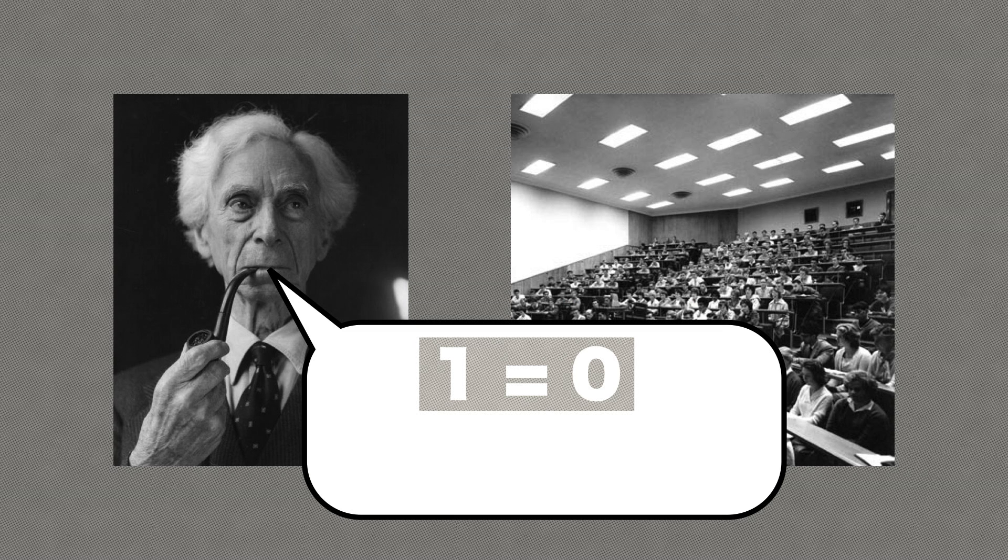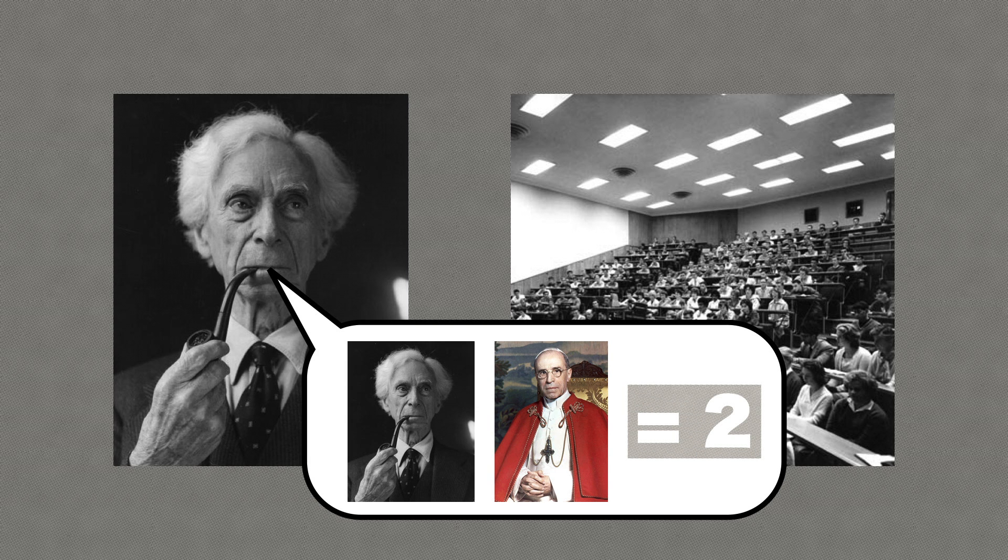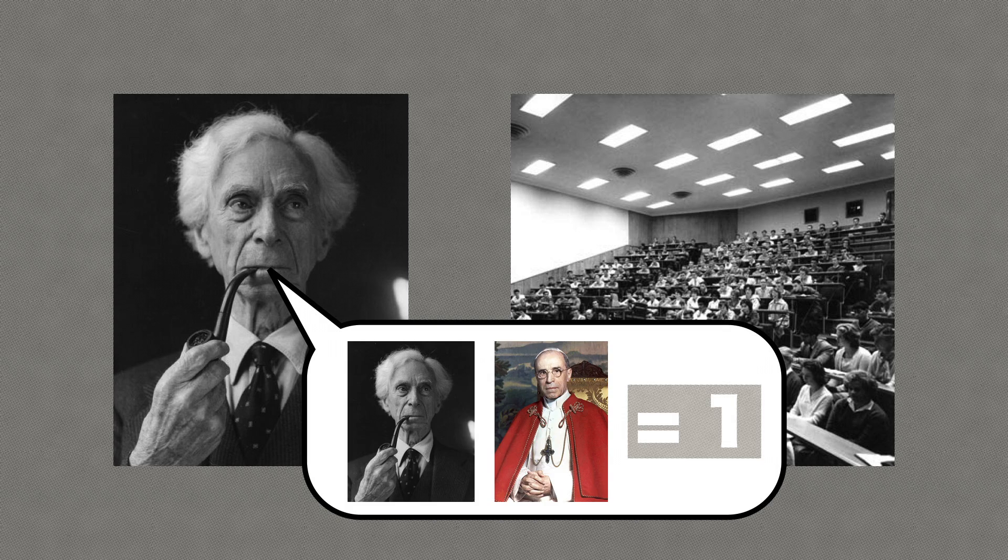Russell replied, if one equals zero, then add one to each side and you get two equals one. The Pope and I are two men. Given that two equals one, the Pope and I are one man. I am the Pope.